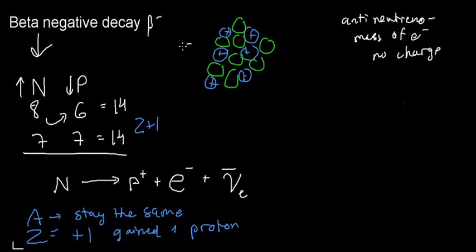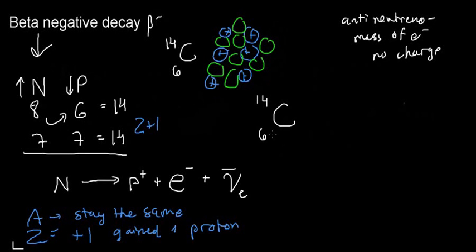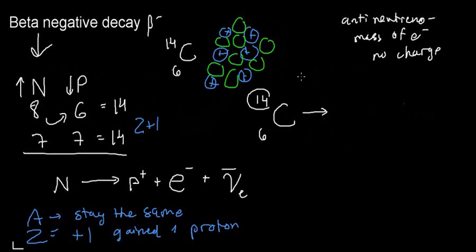This example is carbon-14. What happens to carbon-14? One neutron turns into one proton, so the mass number stays the same. We're not losing any nucleons overall.